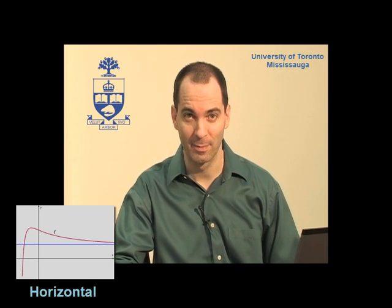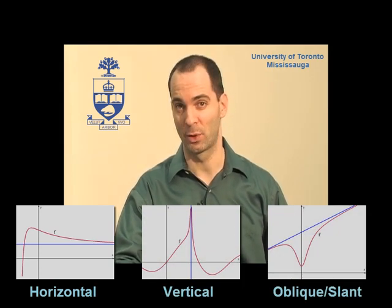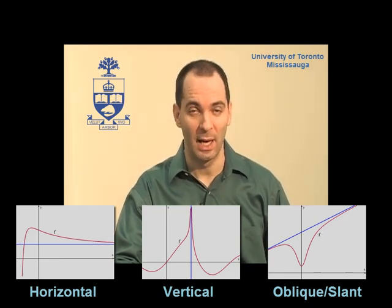In this video we will discuss asymptotes. An asymptote is a straight line that the graph of a given function is approaching arbitrarily closely. As we will see, precise definitions can be made using limits. We distinguish between three types of asymptotes: horizontal, vertical, and oblique or slant asymptotes. In this video we begin with horizontal asymptotes and then move on to vertical ones, leaving the topic of oblique asymptotes to a different video.